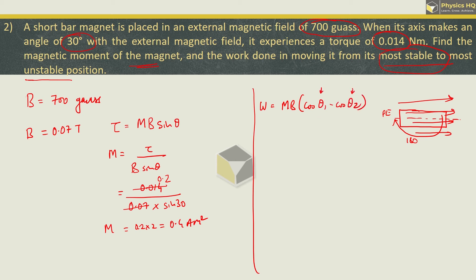So, it will be 0.4 into b is 0.07. Cos of initial angle when it is aligned with magnetic field is 0 degree. Minus cos of most unstable position, which is 180 degree. This is equal to 0.028.